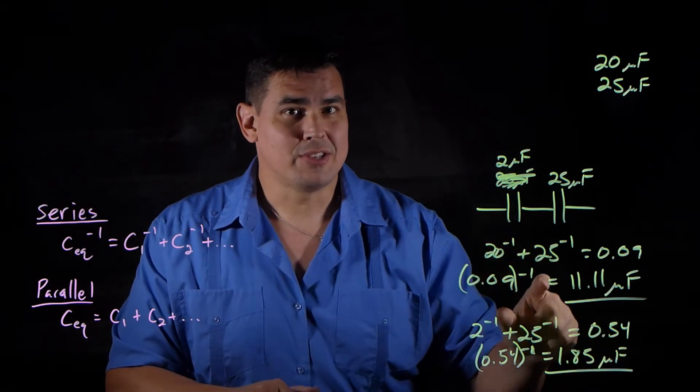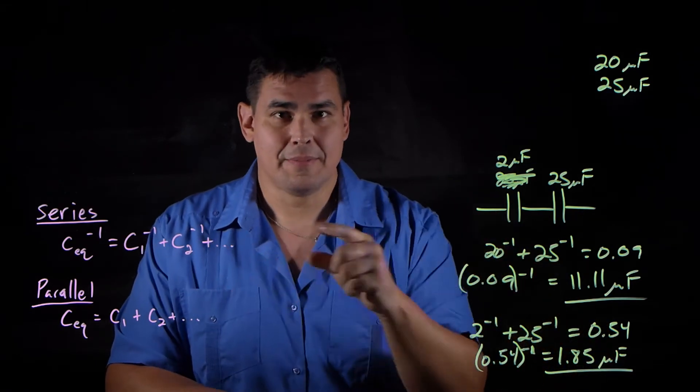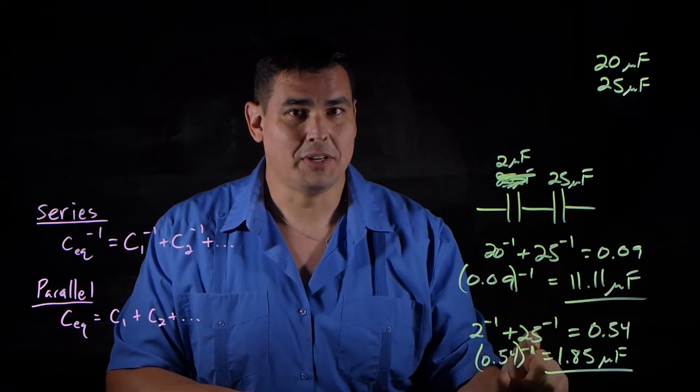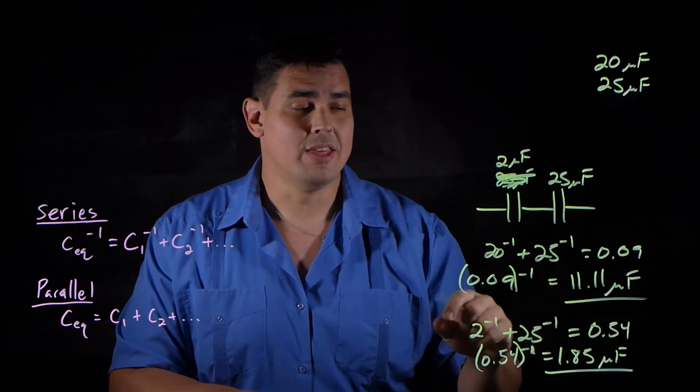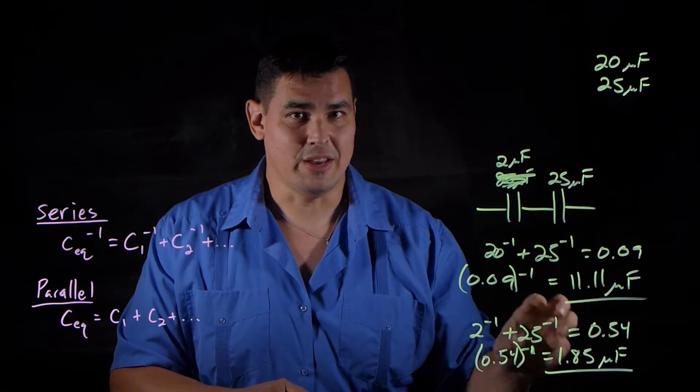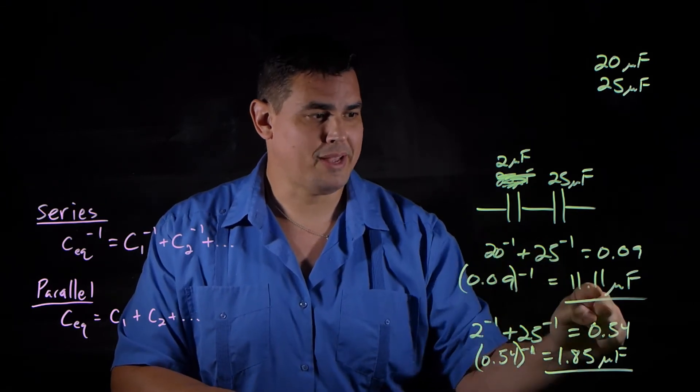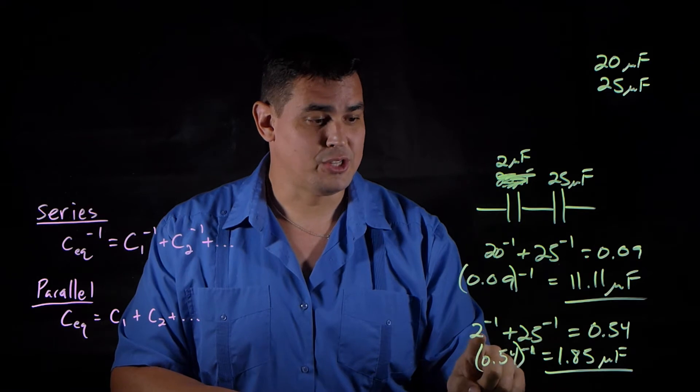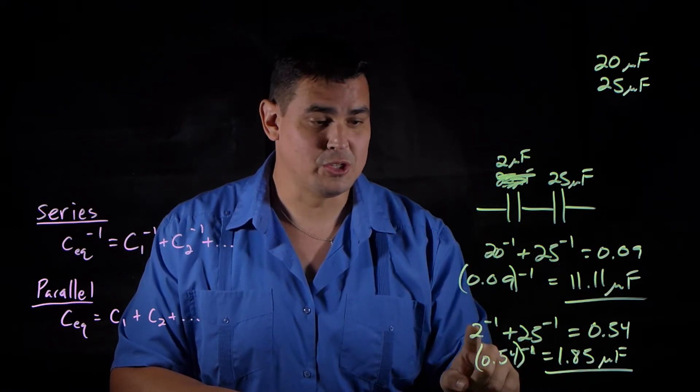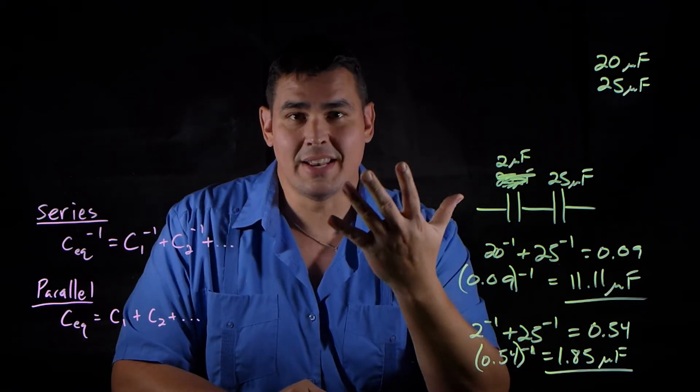So if you notice, when you add capacitors in series, you will always end up with an equivalent capacitance that's smaller than the smallest capacitor that you worked with. So here, I had 20 and 25. My answer is less than 20. Here, when I did 2 and 25, my answer is less than 2.